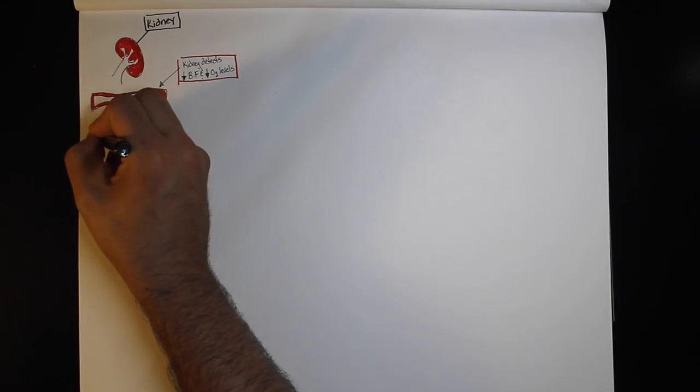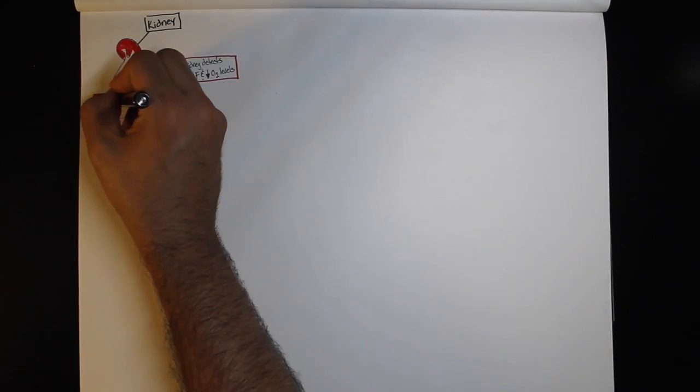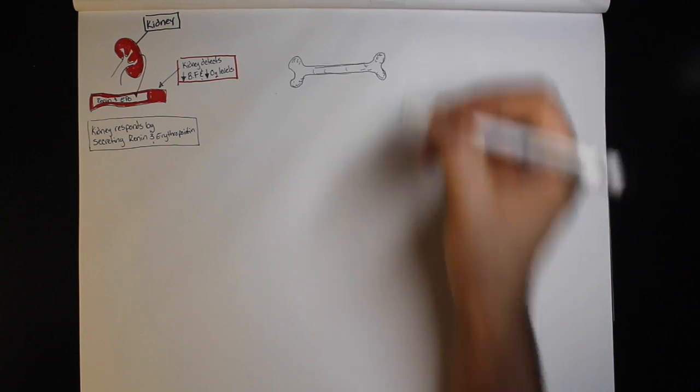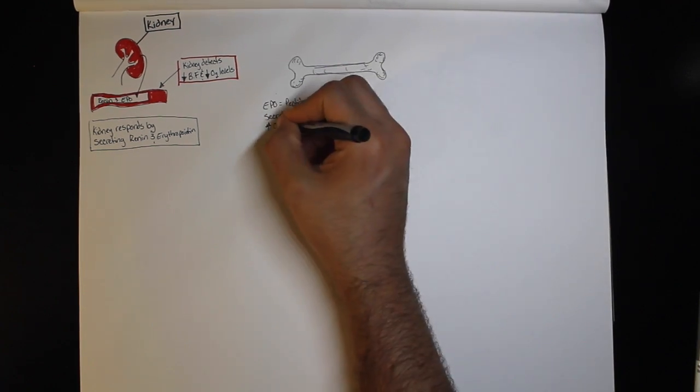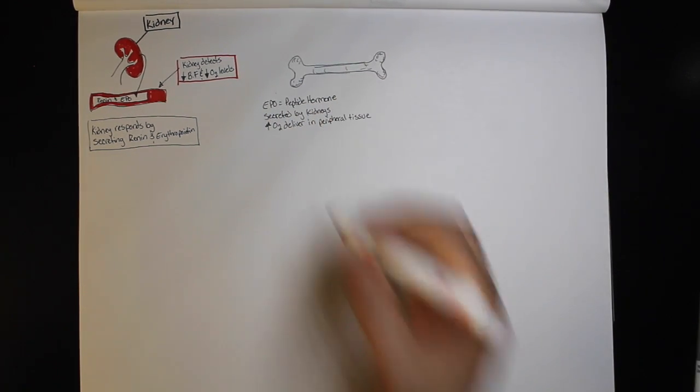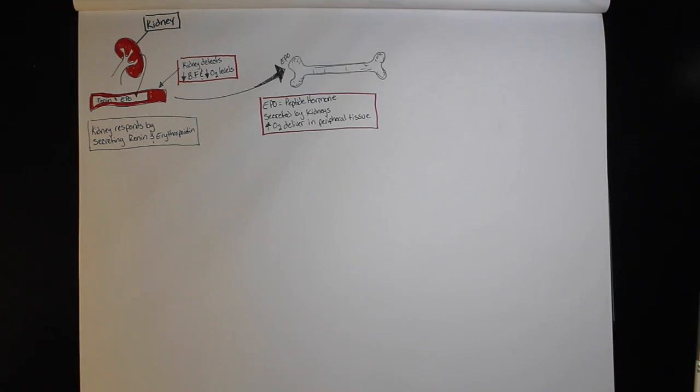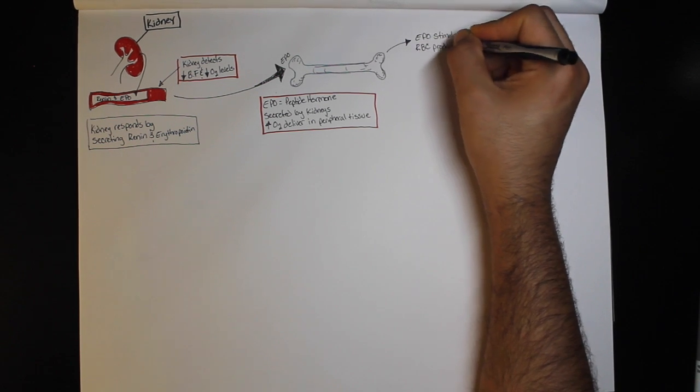Another name for erythropoietin is EPO. The kidneys secrete renin in response to decreased renal blood flow or sympathetic stimulation. The kidneys secrete EPO when they detect low O2 levels within kidney tissue. EPO works by stimulating red blood cell production within bone marrow through a process called erythropoiesis.